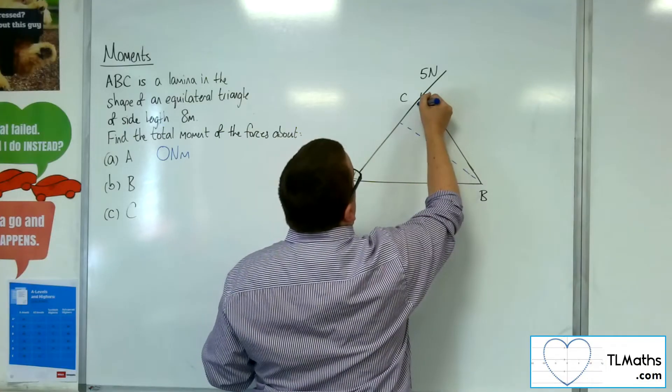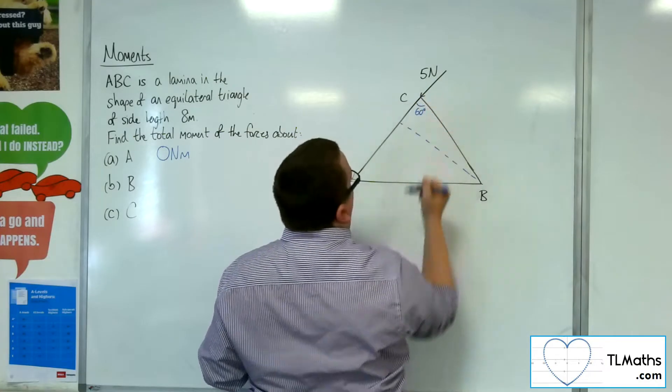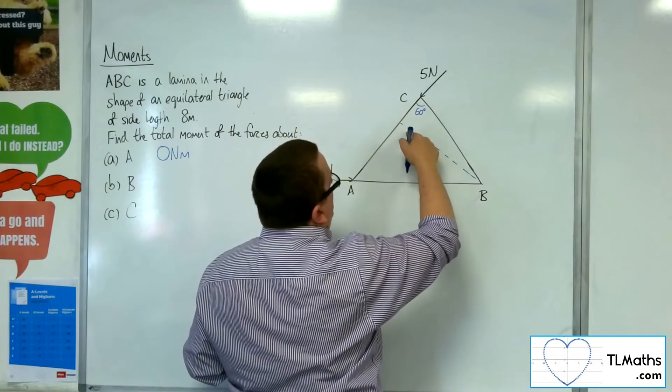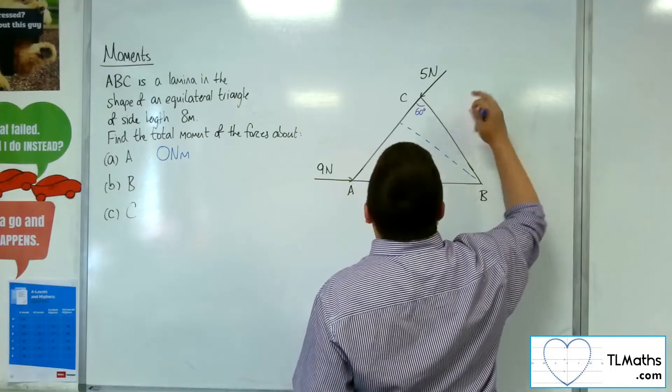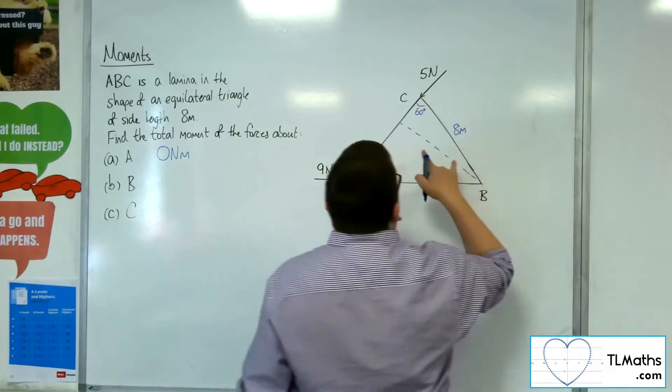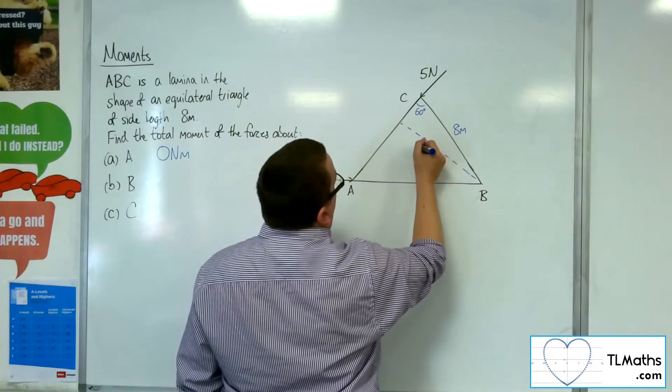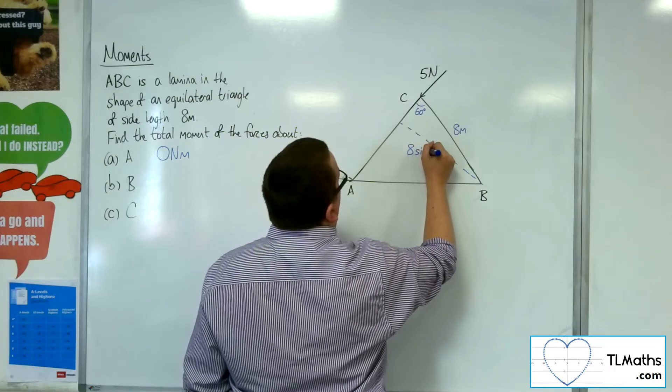then this is a 60 degree angle because it's an equilateral triangle. So this side length here, that length we know is 8 metres. So this is the opposite side, and so that would be 8 sine 60.